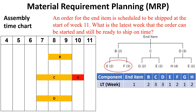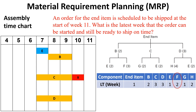In the next level in the product tree, items E and F are required for the assembly of subassembly B. The lead time for item E is one week, so going backward from the start of week 8 by one week means that the order of item E must be released at the beginning of week 7. For item F, its lead time is two weeks, so going backward from the start of week 8 by two weeks means that the order of item F must be released at the beginning of week 6.